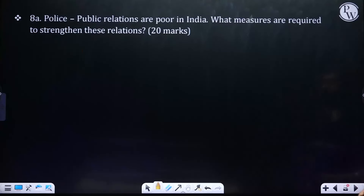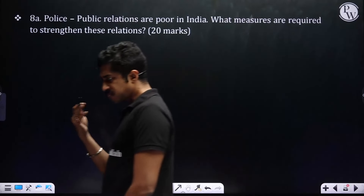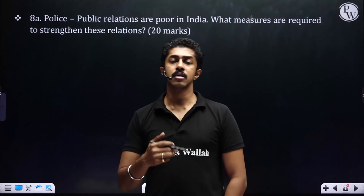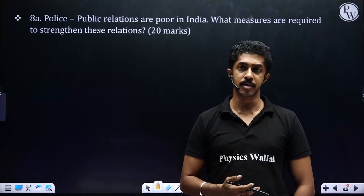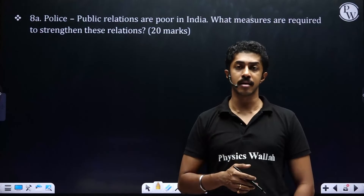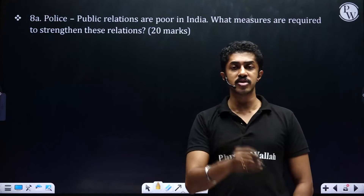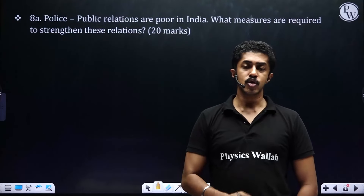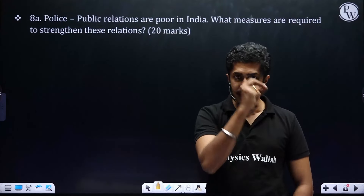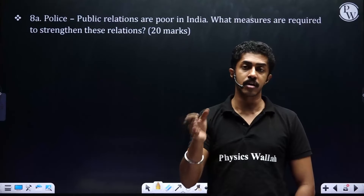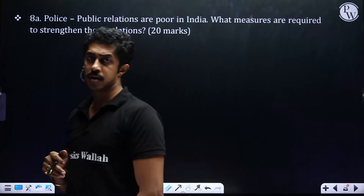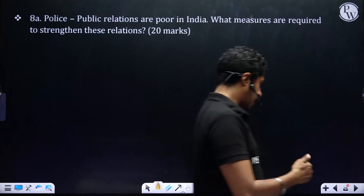Next: 'Police-public relations are poor in India - what measures are required to strengthen these relations?' Measures: online filing of FIR, quick conviction from e-courts, reducing undertrial detention. Once arrested for a petty offense and held too long, citizens become disillusioned with the system. The Supreme Court ruling requiring FIR to be given within 24 hours of registering a complaint is hardly followed by any police station in India - that must be highlighted.